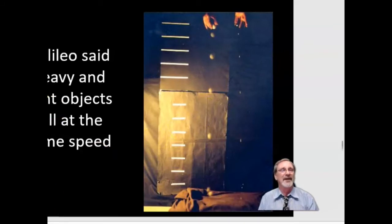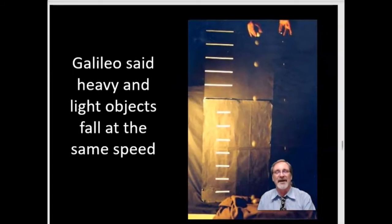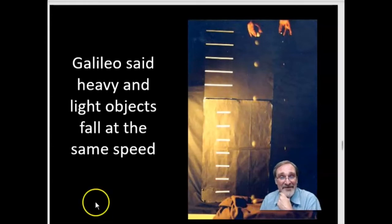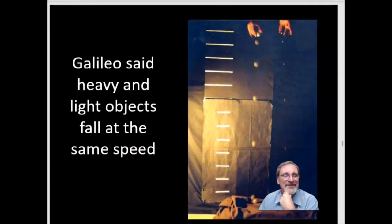And so Galileo said that heavy and light objects fall at the same speed. So heavy and light objects will fall at the same speed. This is something Galileo discovered. And go ahead and please write this down. If you've got to pause, go ahead and pause. But this isn't necessarily a very obvious thing. Things fall so fast, you can't really see how fast they're falling. But Galileo basically proved that it was true.